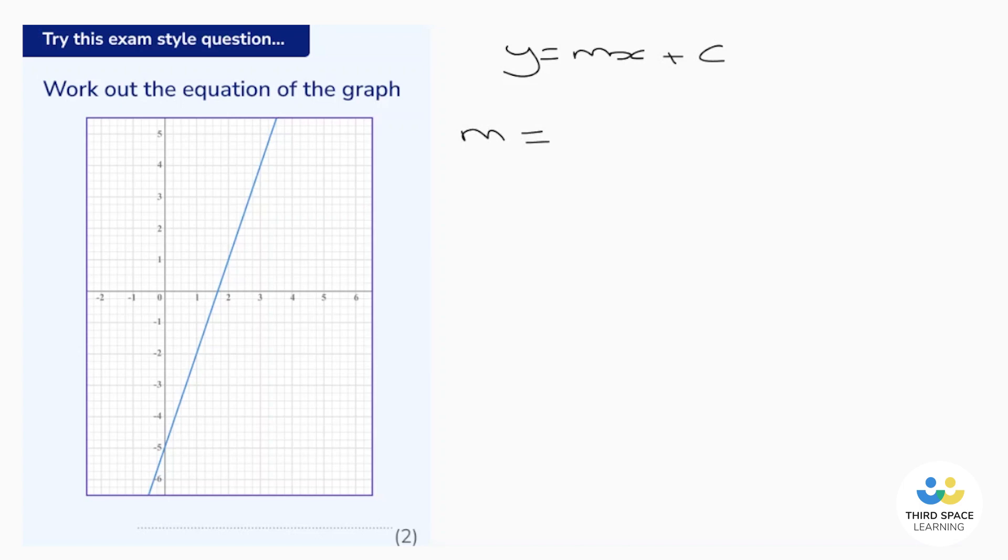So let's start with the gradient m. M tells us how the graph changes over time. All we have to do is pick any two points we want on the graph. It's a good idea to pick points where the graph goes through a corner. So let's go for this one here, and let's go for this one here.